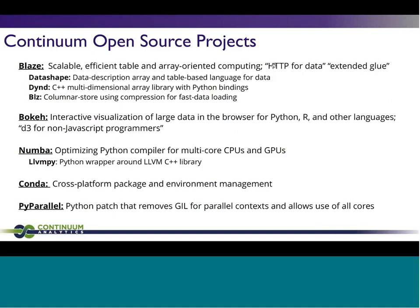Continuum itself has a series of open source projects. Blaze is a very ambitious, scalable, efficient table and array computing story — extended glue for big data. There are sub-parts to the Blaze project: a data shape project, which is a data description array and table-based language. Bokeh is a fantastic interactive visualization of large data in the browser — basically D3 for non-JavaScript programmers. You can build interactive visualizations in the browser in IPython notebook. Numba is an optimizing Python compiler that enables you to use the CPU. Conda is our package manager. And PyParallel is an early story — a Python patch to remove the GIL for parallel contexts and allow use of all cores from Python.